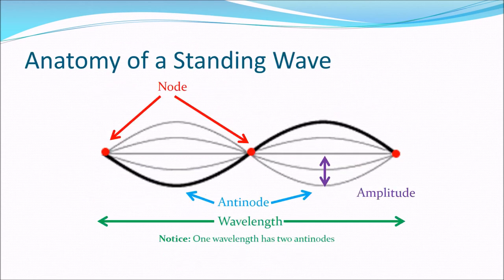The green lines indicate where antinodes are. Remember amplitude is only half of that loop distance. Nodes appear at all pinched portions of the string, antinodes at the widest part of each loop. One wavelength has two antinodes and three nodes.